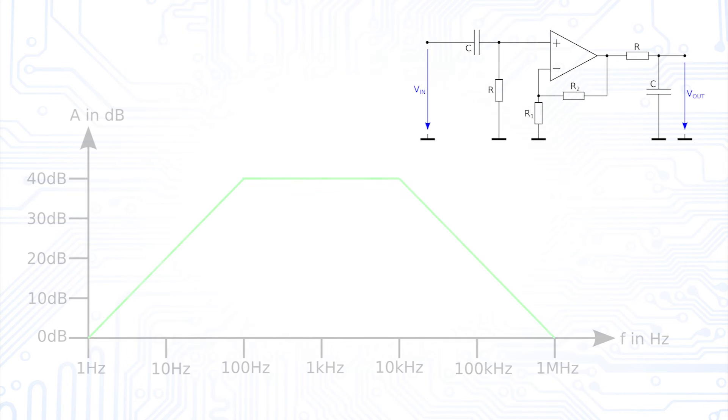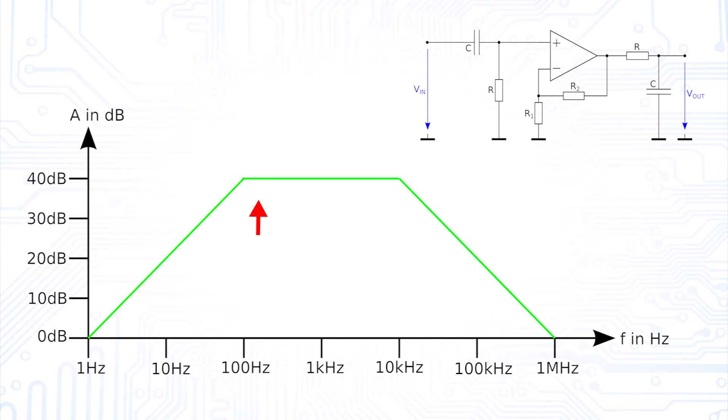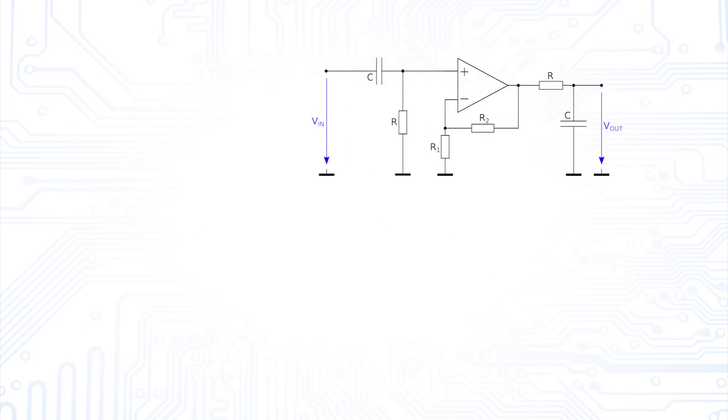In this configuration, however, we might run into the problem that our bandwidth is very large. If we want to build a more selective active bandpass filter, we can combine the individual circuit parts with the help of an inverting operational amplifier.